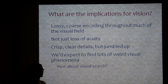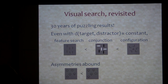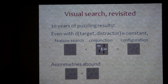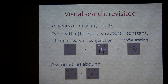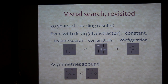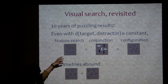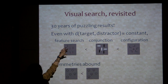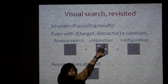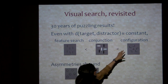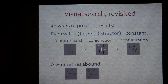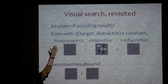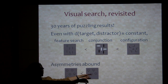You'd imagine there'd be implications of this for other parts of vision too. What about visual search? There's about 30 years of results on visual search and arguably still quite puzzling. The main puzzle is that even if you essentially hold constant the discriminability between the target and the distractors, you still get big differences in performance. Loosely speaking, feature search — where one feature determines the target — is easier than conjunction search, where you have to combine two features like orientation and luminance. And configuration search is still harder.